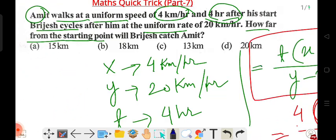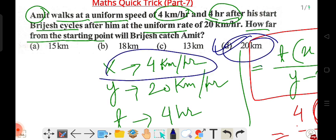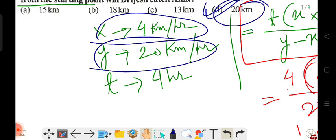Option D is the answer: 20 kilometer. Amit's uniform speed is four kilometer per hour, Brijesh's is 20 kilometer per hour, time is four hours, and using this formula we get the answer.